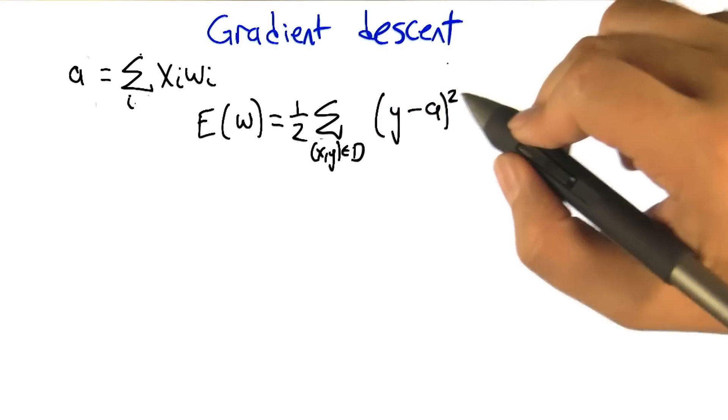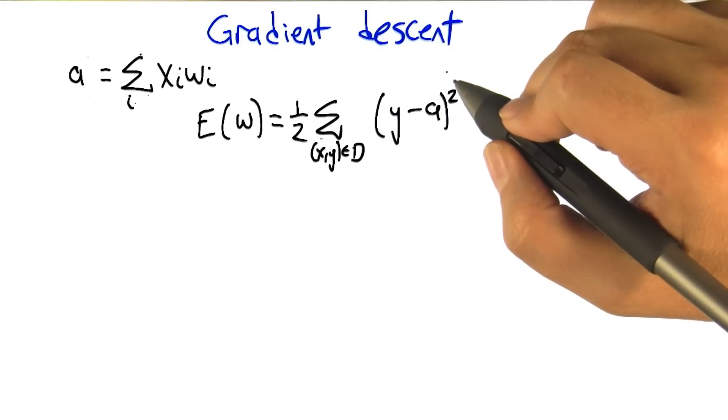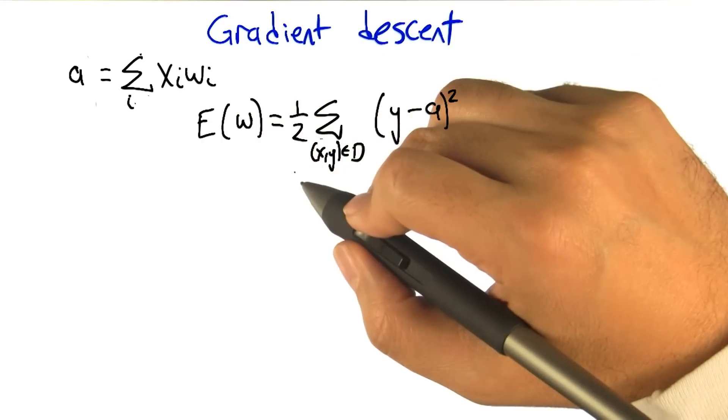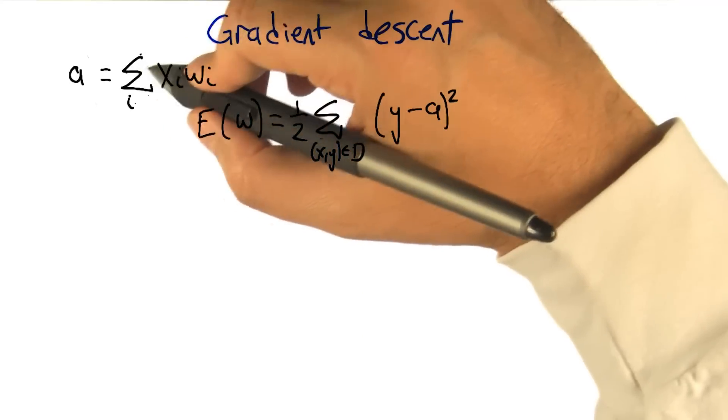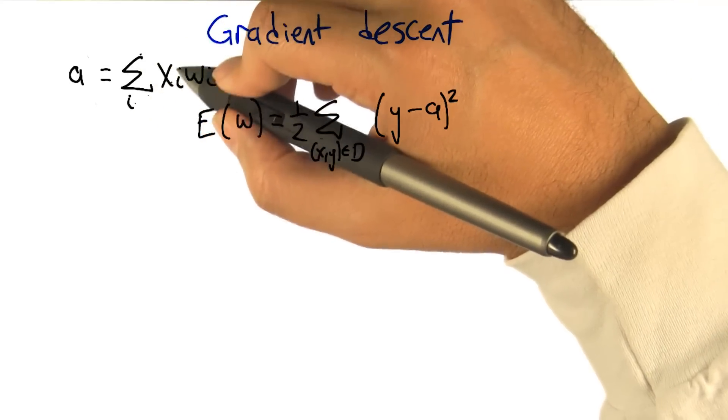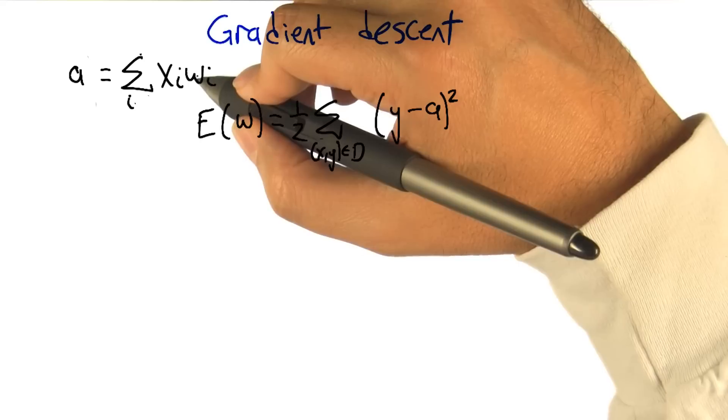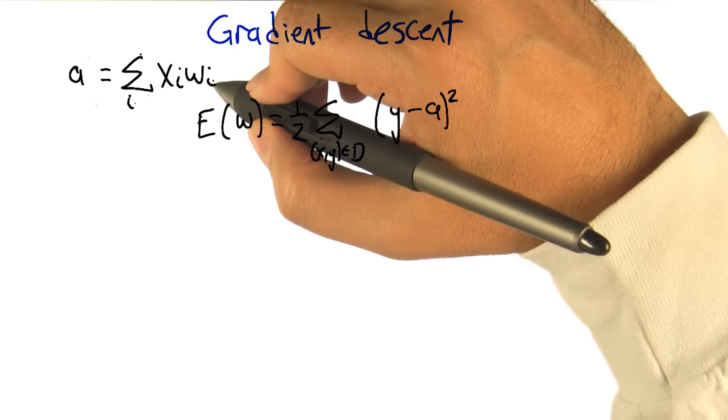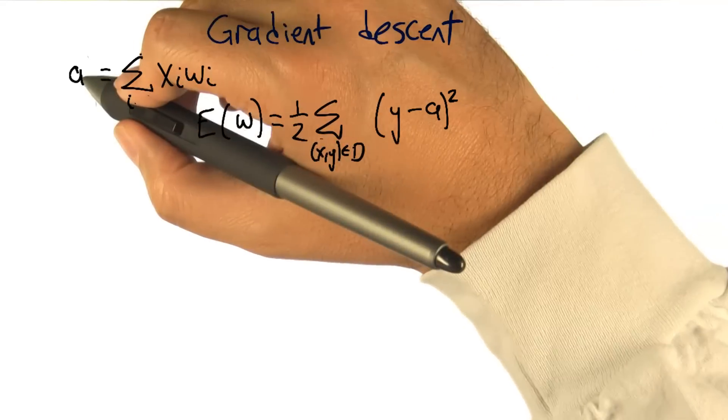So gradient descent is going to give us an algorithm for doing exactly that. What we're going to do now is think of things this way. What we did before was we had a summation over all the different input features of the activation on that input feature times the weight w for that input feature. And we sum all those up and we get an activation.